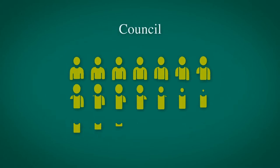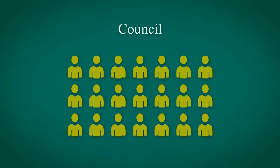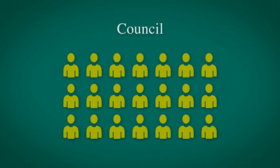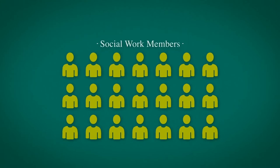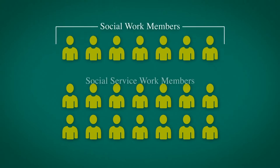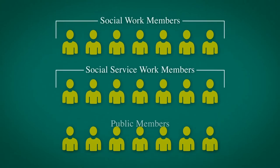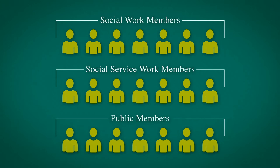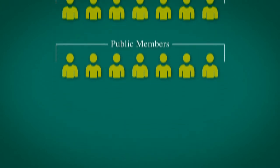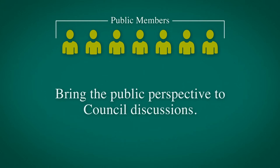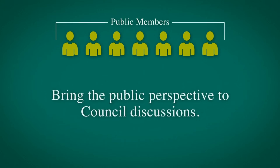Council is the 21-member governing board and board of directors that manages and administers College affairs. Council is composed of seven elected Social Work members, seven elected Social Service Work members, and seven public members appointed by the Ontario government. The role of the appointed or public members is to bring the public perspective to Council discussions.